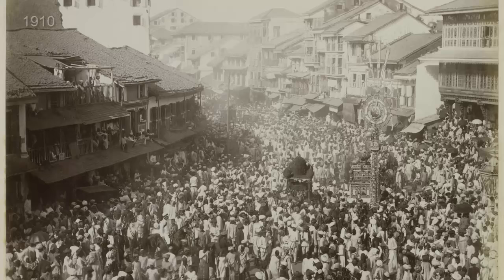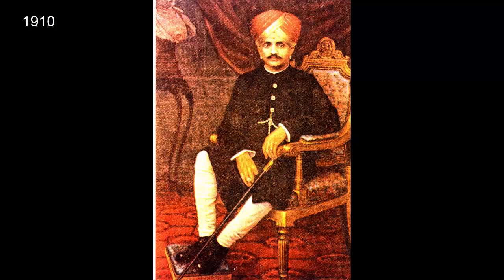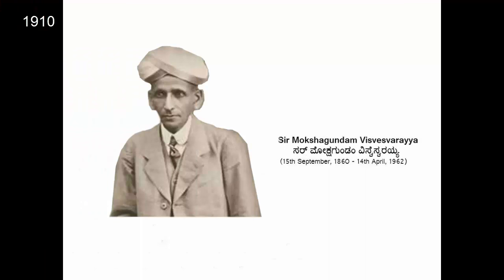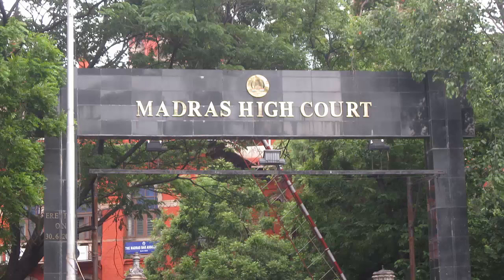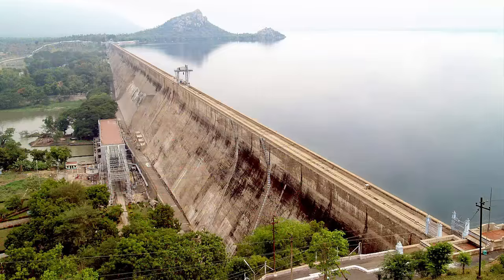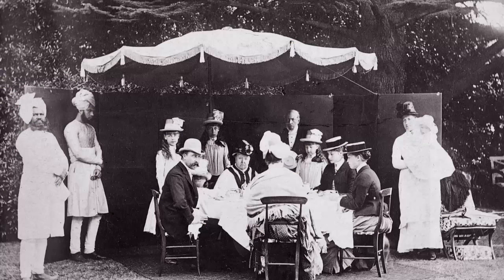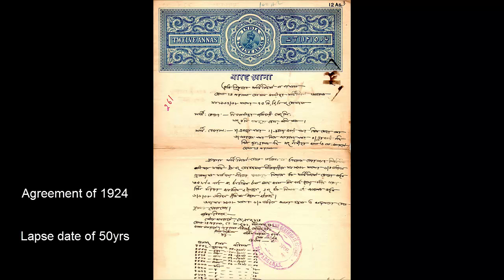This matter went to the British government. Mysore king Nalwadi Krishna Raja Vodayar and chief engineer M. Viswasariya came up with a plan to construct a dam. This move got the Madras Presidency really upset, and they refused to give consent, because Madras had its own plan to build a storage dam. The matter again went to the Government of India, and they came to an agreement — the Agreement of 1924 — which had a lapsed period of 50 years, meaning this agreement would come to an end after 50 years.